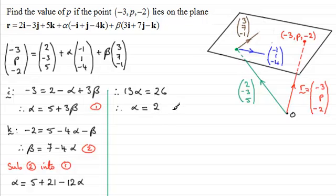Now that I've got α = 2, I could substitute this back into equation 2. And if I substitute that back into 2, I therefore have β = 7 - 4 lots of α, 4 × 2 is 8. So therefore β = 7 - 8, which is -1.